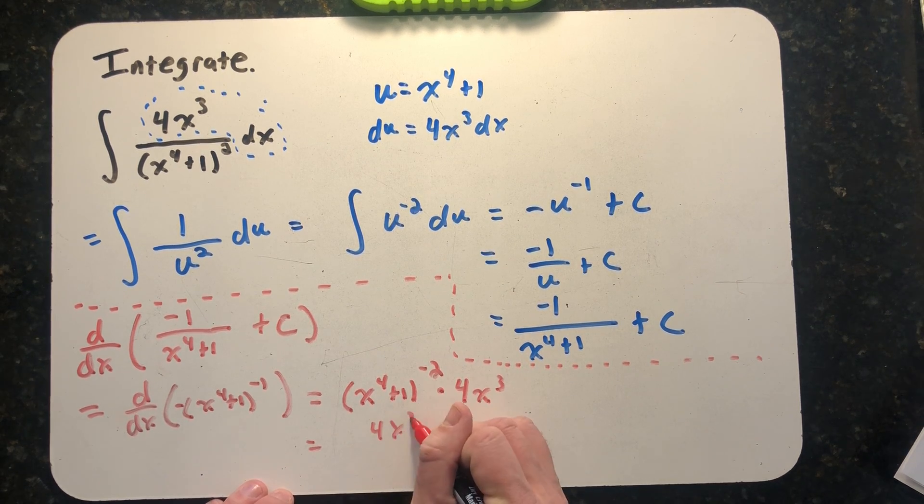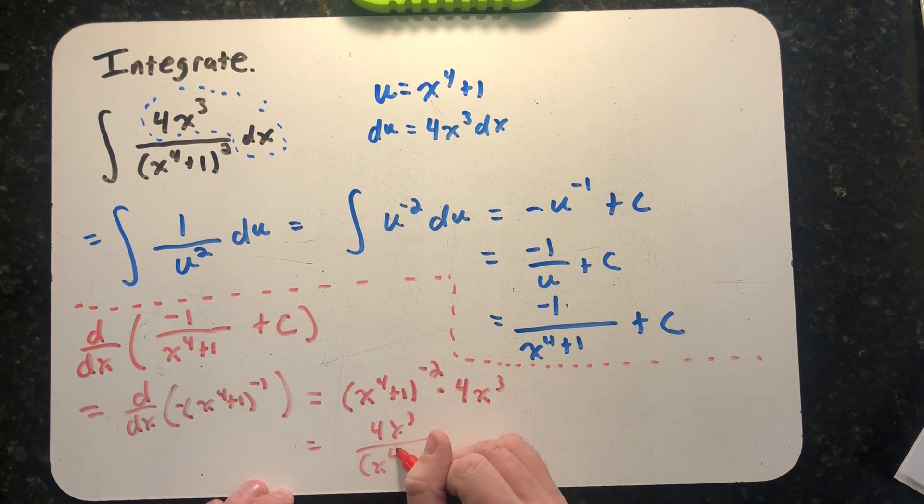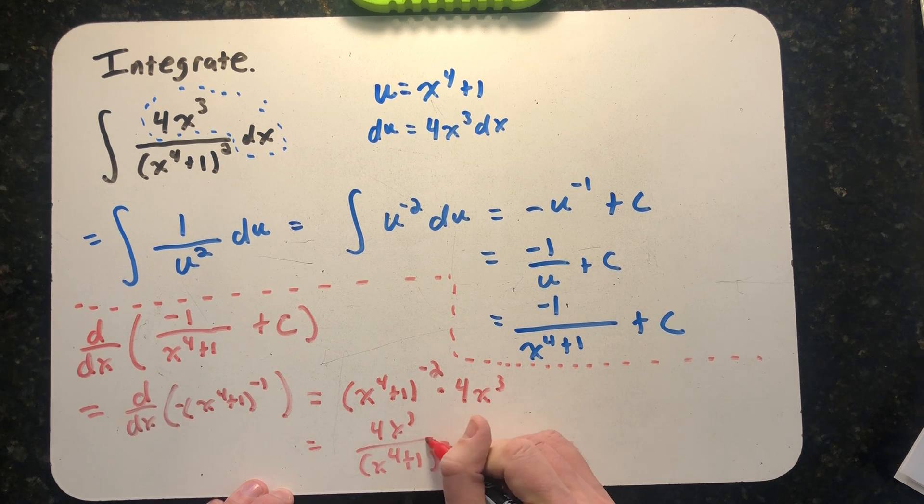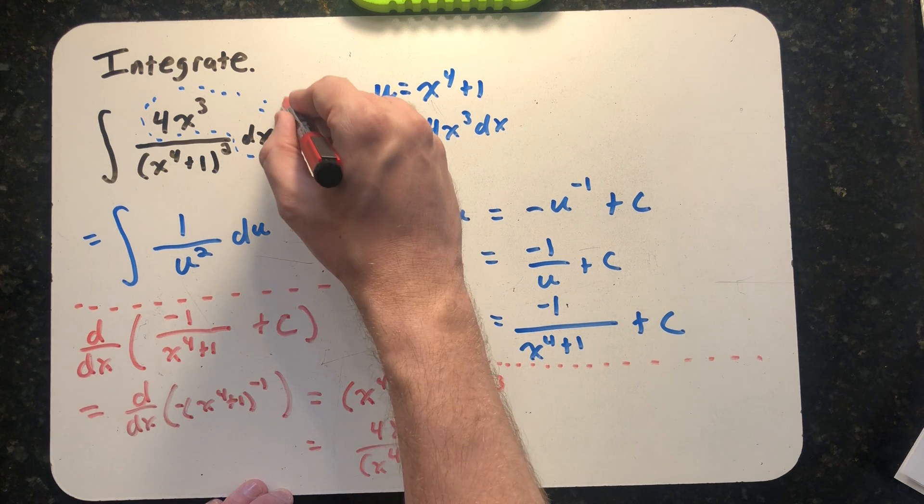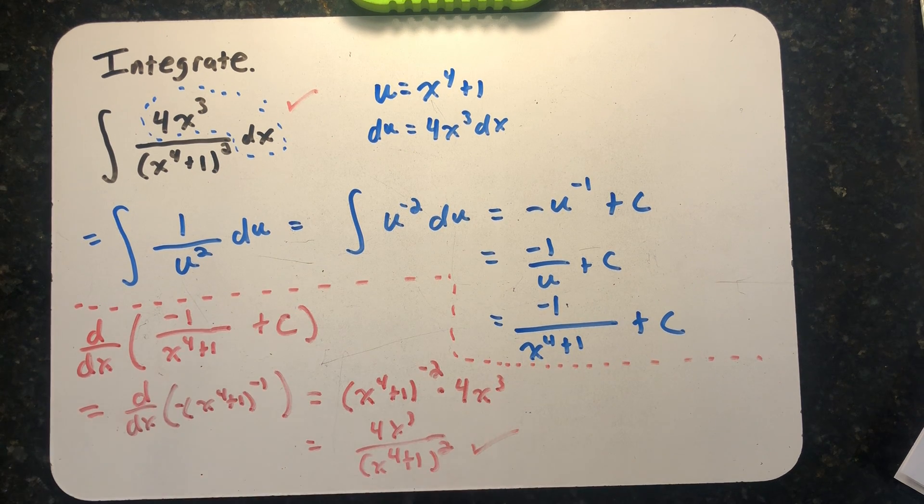I get 4x³ divided by (x⁴ + 1)², and that was my original integrand. So we have found a correct anti-derivative for this function.